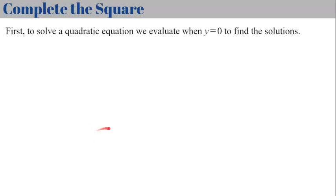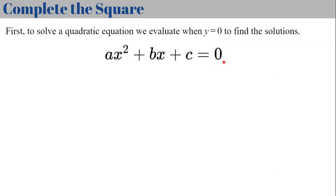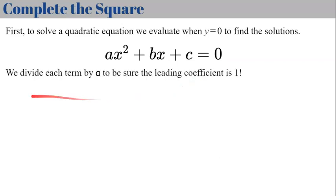Step one: to solve a quadratic equation we evaluate y equals zero, since replacing y with zero gives us our solutions or x-intercepts, sometimes referred to as roots. Step two: we divide each term by a to ensure the leading coefficient is one. Since this is a generic form and we don't know if a equals one or another value, we divide everything by a.